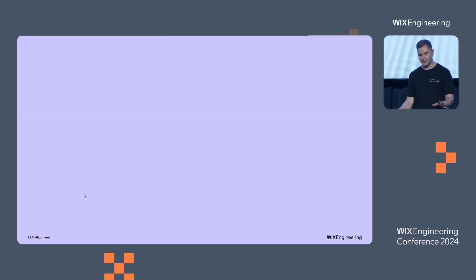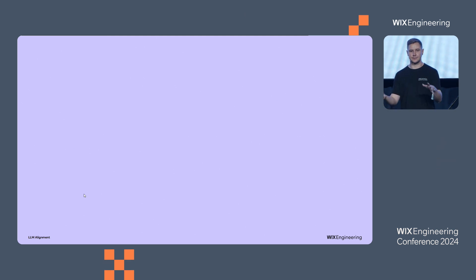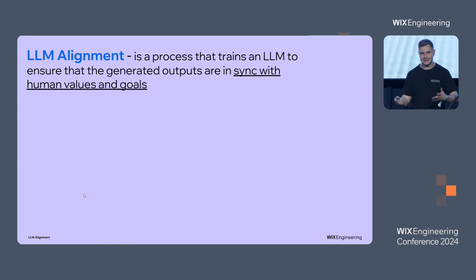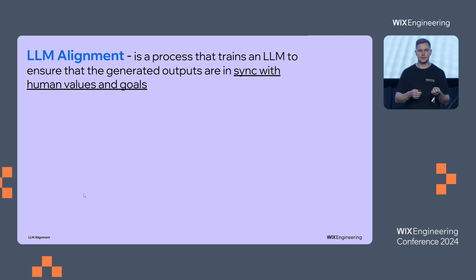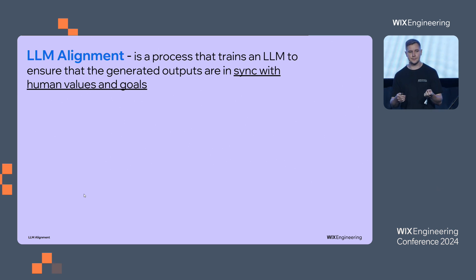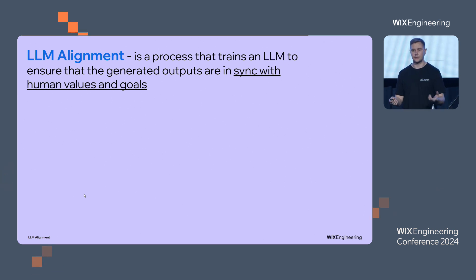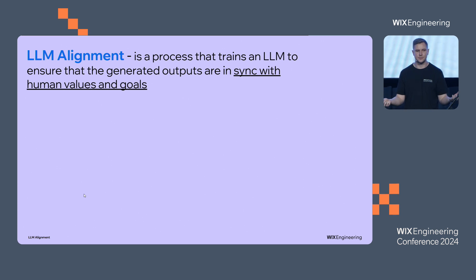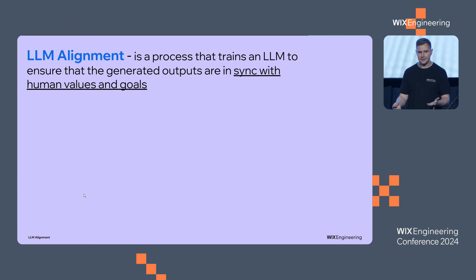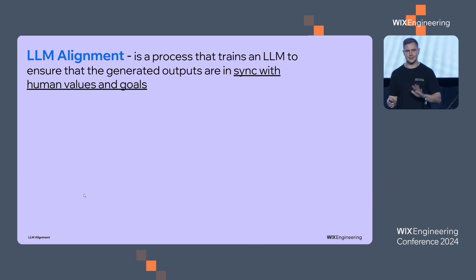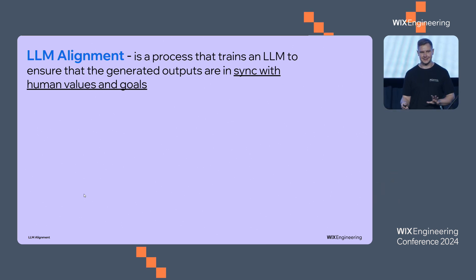Here I want to, together with you, be aligned on what it means — the definition. LLM alignment is a process that trains an LLM to ensure that the outputs of the LLM are in sync with our values and goals. And you can ask me: what are the values and goals, what does it mean, who defines them? I would say you, or the people who are aligning LLMs, and sometimes also regulators, who join the party to say what is wrong and what is not.